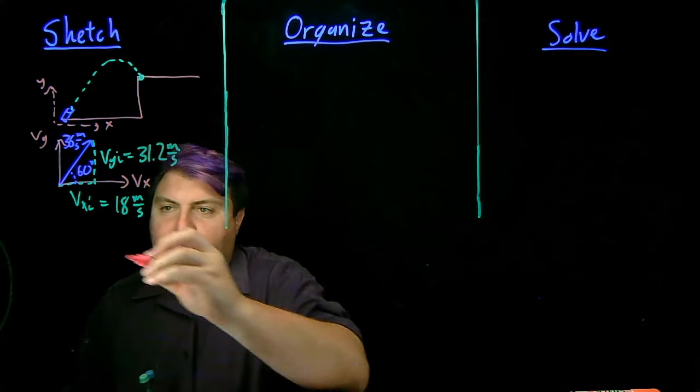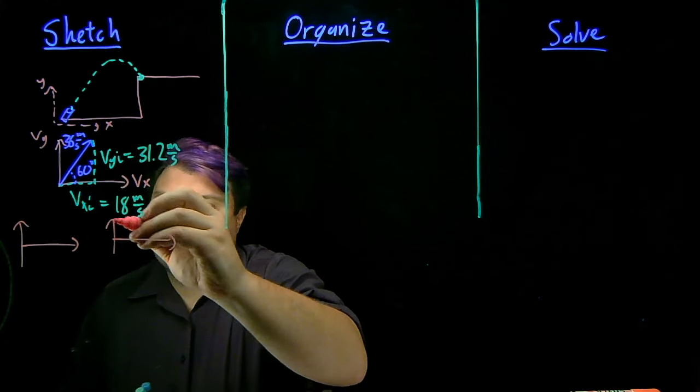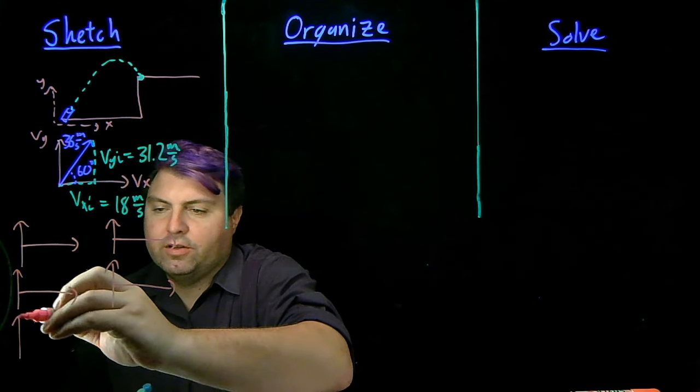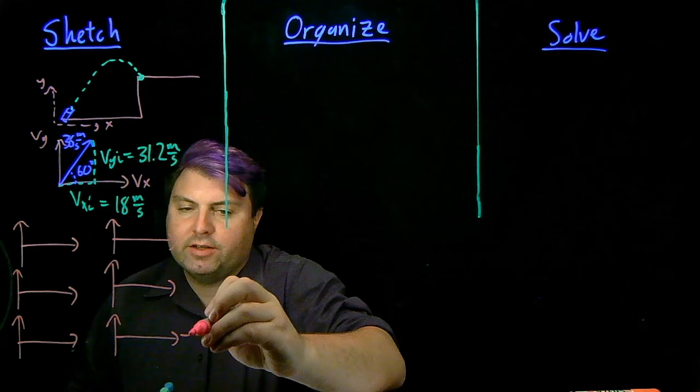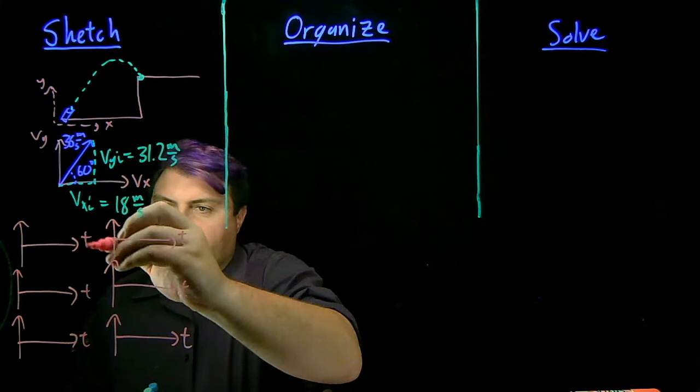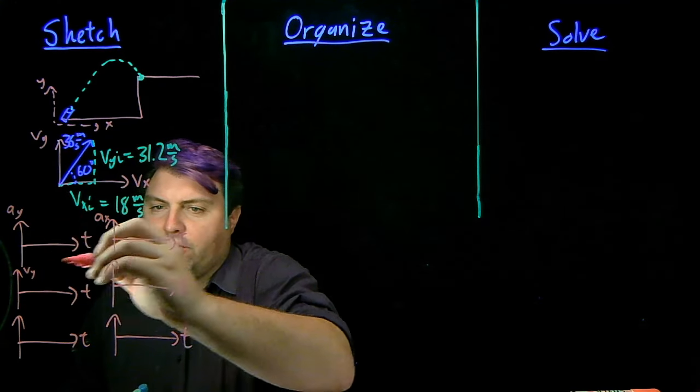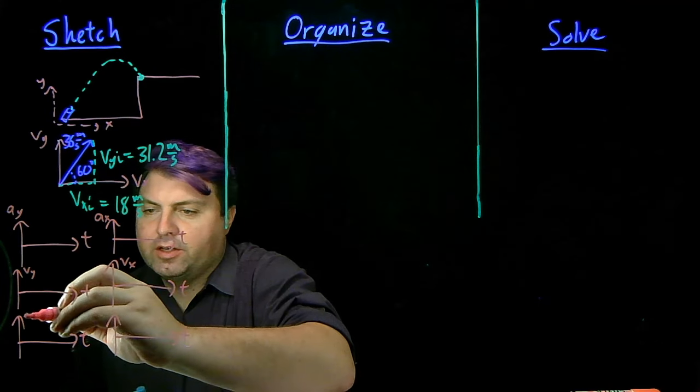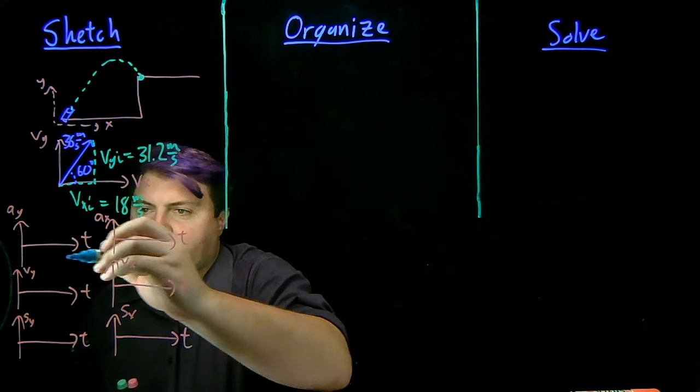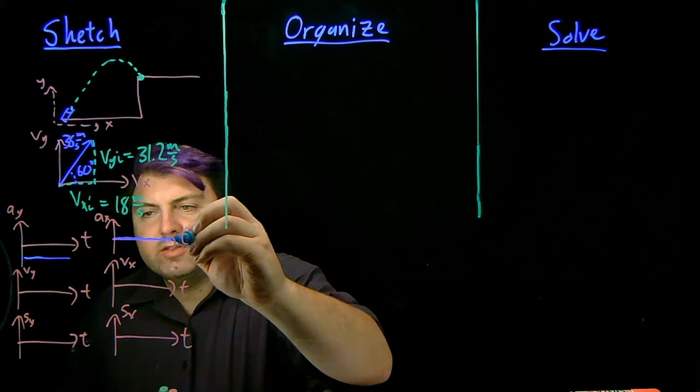If we need to we can of course draw the six graphs of all the motion just to make sure that we're feeling good about it. So we'll do it as a nice exercise so our x-axis is always going to be time and then we're going to have our acceleration of the y, acceleration of the x, velocity of the y, velocity of the x, position of the y, position of the x. So our acceleration of the y is going to be negative 9.8, our acceleration of the x is going to be 0.